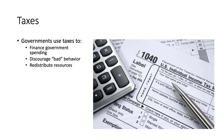Taxes can also be used to redistribute resources. Each of us pays taxes and these can be used to finance things like health care for the elderly in the form of Medicaid. These are different elements we can use to redistribute resources in terms of welfare and SNAP programs as well.